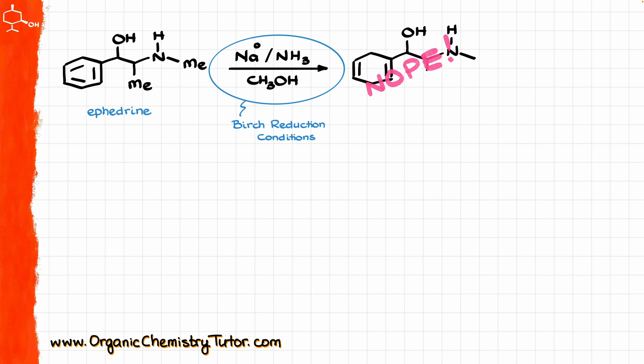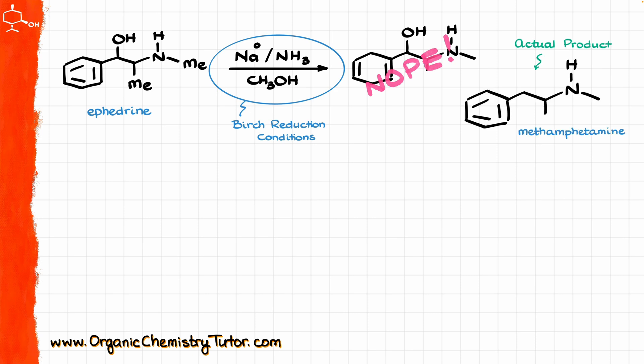Wrong! Because that is actually not the major product — the major product in this reaction is this guy. So instead of the Birch reduction, we ended up losing the OH group from the benzylic position. Well, how did that happen?